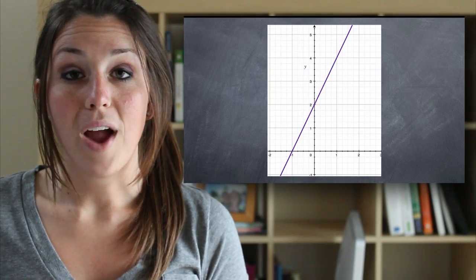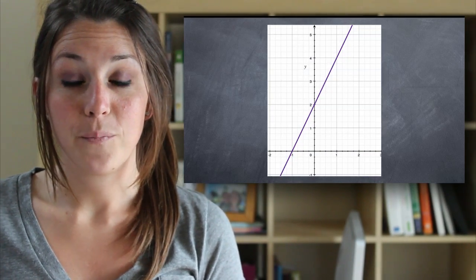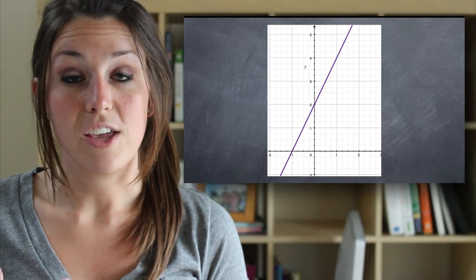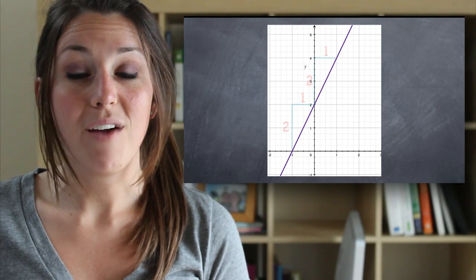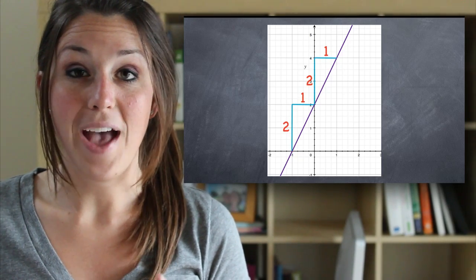For example, picture the graph of the function 2x plus 2. We can tell just by looking at the equation that the slope of the line is 2. And it doesn't matter where we are on the graph of the function, the slope is 2 everywhere.